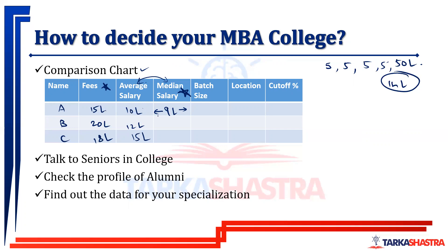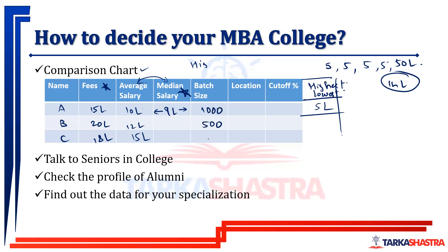Because if the average salary is 9 lakhs, we can say 50% are above and 50% are below — that is where the median lies. Also, for example, if a college says no company offering below 6 lakhs is invited to campus, then knowing the lowest salary is also very important. Because if during your placement season things don't go well, you may have to accept the lowest salary.